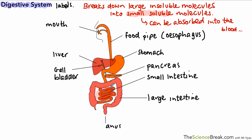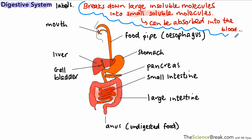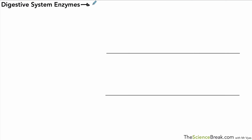The blood can then carry those molecules around to the various parts of the body where they are needed. Most of the final digestion and absorption into the blood happens in the small intestine. Any food that cannot be digested will pass out through the anus — it's not waste, it's material that simply cannot be digested.